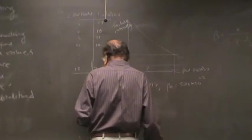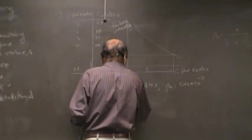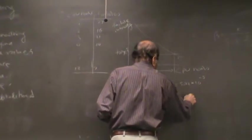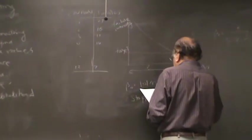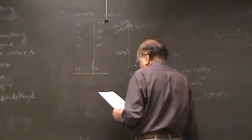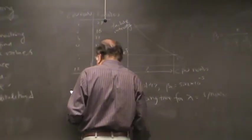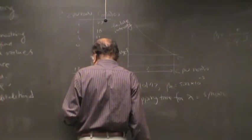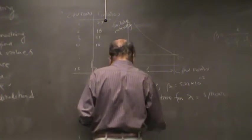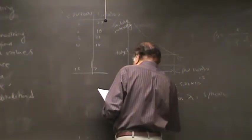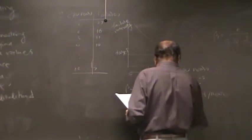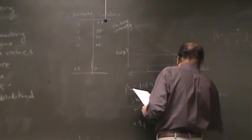And then the stopping time would be given by the time for lambda equal to one per hour. Solving the equation would give you about 56,473 seconds, which is about 15.69 hours.